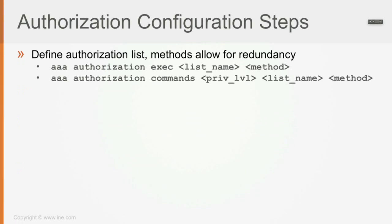Authorization configuration steps: once authentication is configured and the user successfully authenticates, you may want to also provide authorization. We have two types of authorizations — exec and commands. The command 'aaa authorization exec' and 'aaa authorization commands' are used. You define a list name — default or named — and then the method, for which you can configure one or multiple methods.